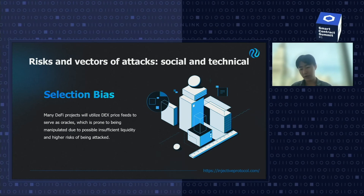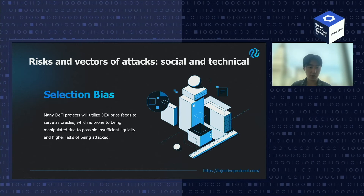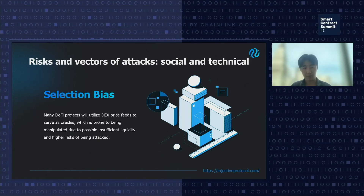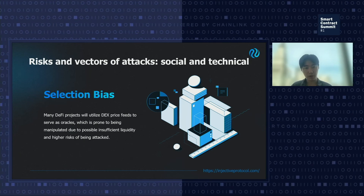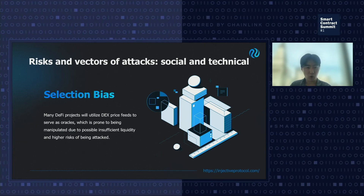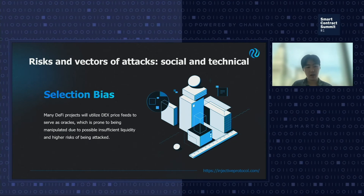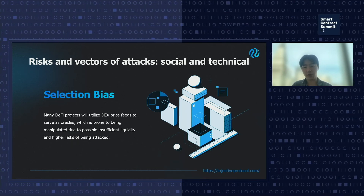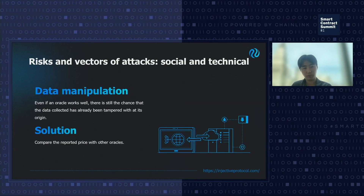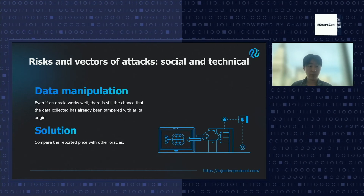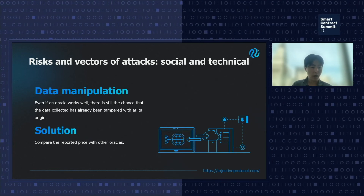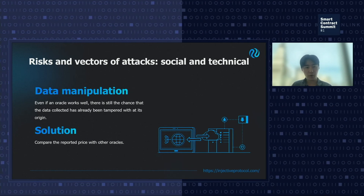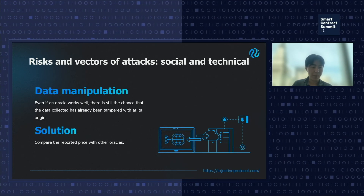Another issue we face a lot but that isn't discussed much is selection bias. Many DeFi projects utilize DEX price feeds to serve as oracles, which is obviously prone to manipulation. Going back to price quality — we want the oracle price feed to reflect global liquidity. If you only utilize DEX price feeds, you're not reflecting global liquidity, making you prone to manipulation — often flash loan attacks and other vectors. Additionally, oracles are ultimately just an aggregation and verification channel, pulling from exchange data, exchange APIs, or traditional sources, so if data is manipulated at the source level, that creates another issue.